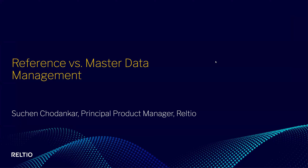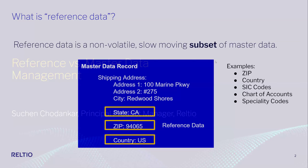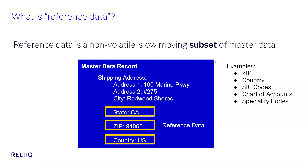I've been in this space for close to 20 years. I want to start by defining what reference data is. Reference data is a non-volatile, slow-moving subset of master data. Examples include zip code, country, specialty code, identifier types. When you look at data across your different domains — like individual, products — there are some attributes that basically do not change that much, like state or country. That's one way of looking at reference data, as a subset of master data. Before I dive into how Reltio manages reference data, I want to talk a little bit about the Reltio platform.